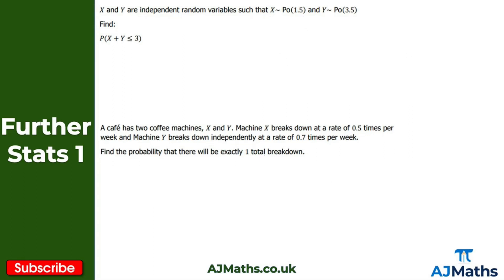So we've covered a couple of examples together — now it's your turn, so pause the video, have a go, and then we'll take a look at what you should have got. For the first practice question, we've got two independent random variables x and y, so x plus y will also be a Poisson distribution. The parameter will be the sum of the individual parameters: 1.5 plus 3.5, giving us 5.